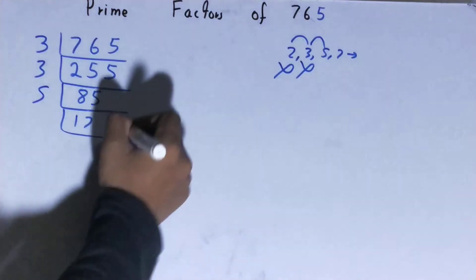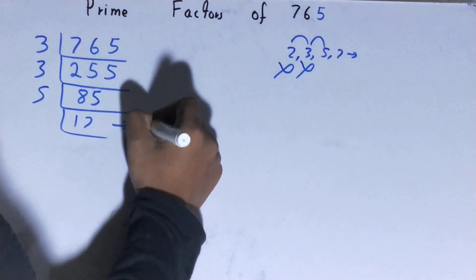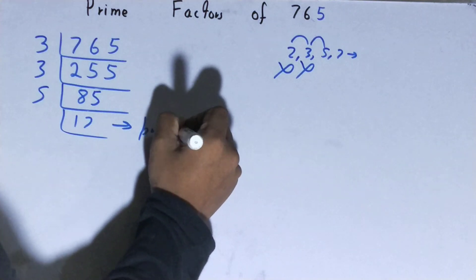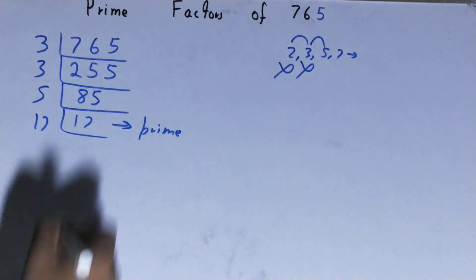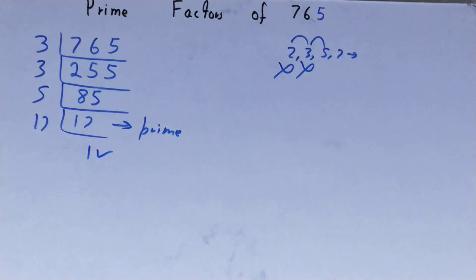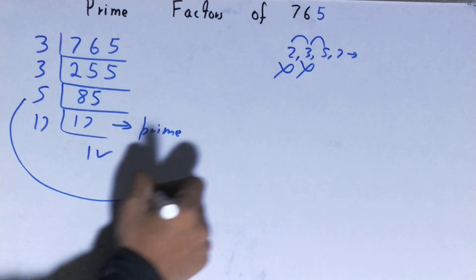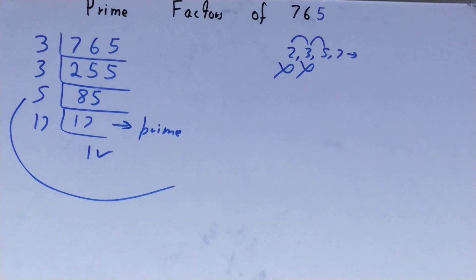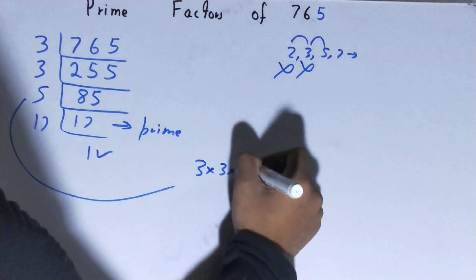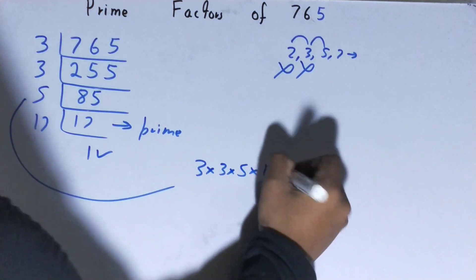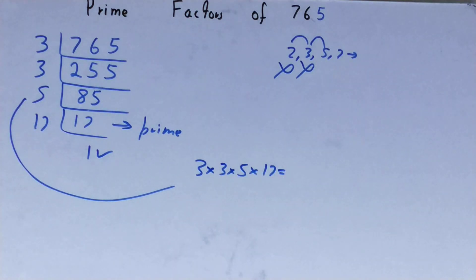Is 17 divisible by 5? No. And 17 is also a prime number, so it is only divisible by itself. When you divide it you will be left with 1, and once you're left with 1 the work is done. Whatever you have on the left-hand side is the set of prime factors for 765 — that is 3 × 3 × 5 × 17.